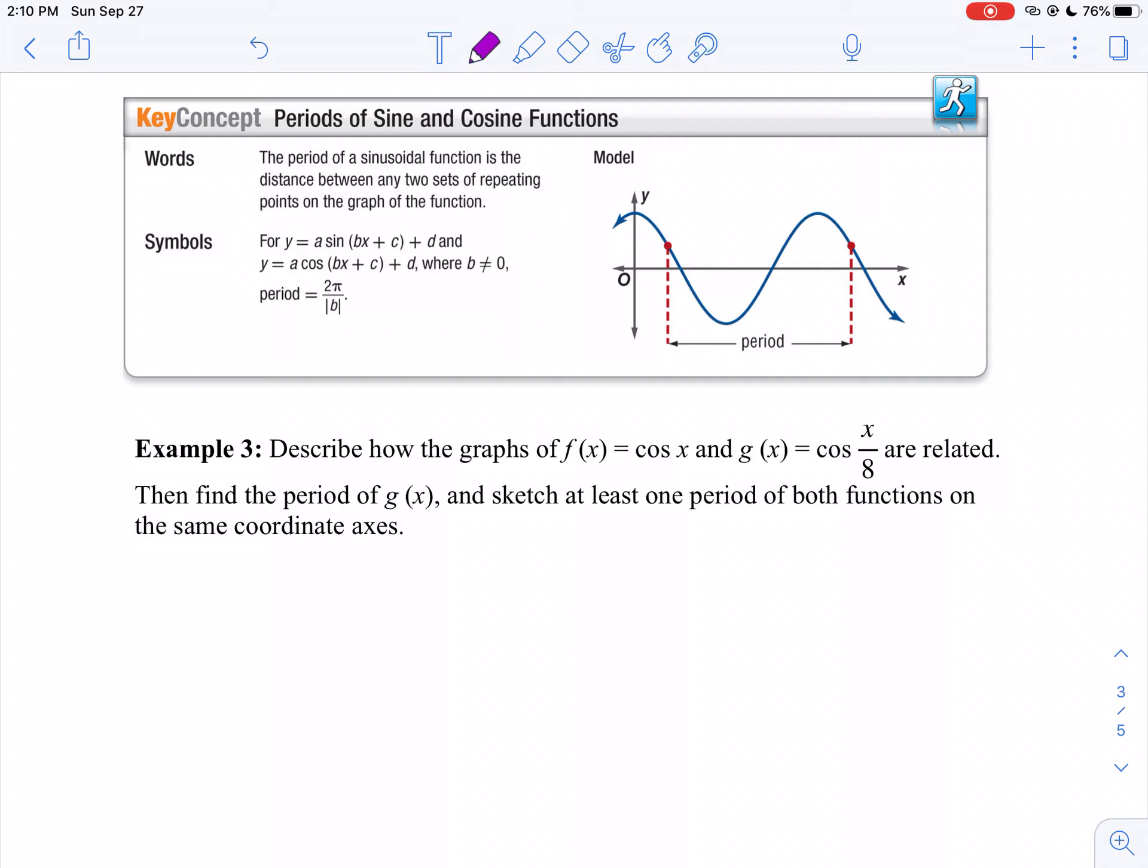First off, if I look at my function, it's g(x) equals cosine of x over 8. Well, I want you to think of that as actually the cosine of one-eighth x. So b is one-eighth. So what does that do to our period? Well, our period then is going to be 2π divided by one-eighth, which is actually 16π.